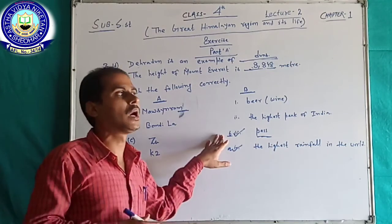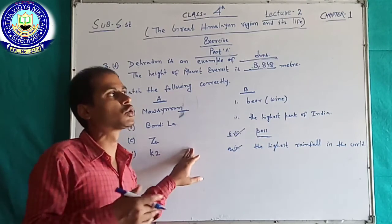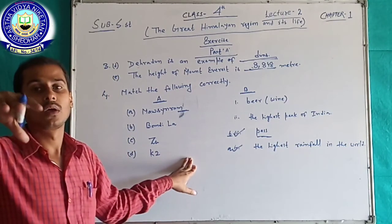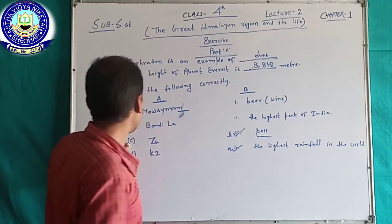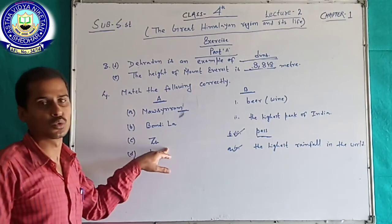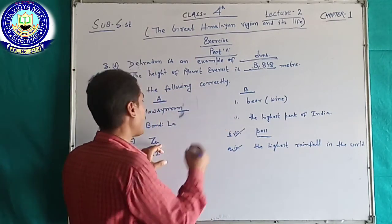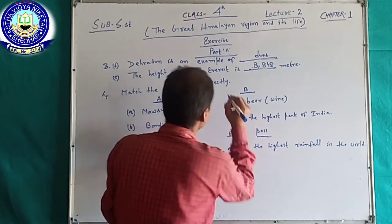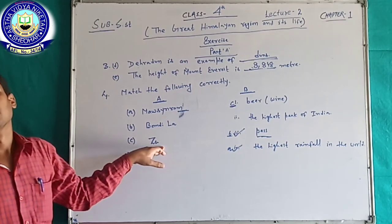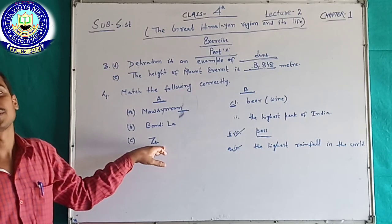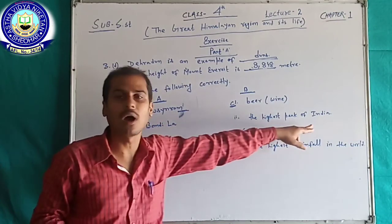Just like Nathula — it is the best example of this type of pass, and Nathula is a road over the mountains. Next, Zu — a type of wheel founded in Nagaland, whose capital is Kohima. And last, K2 is the highest peak of India.